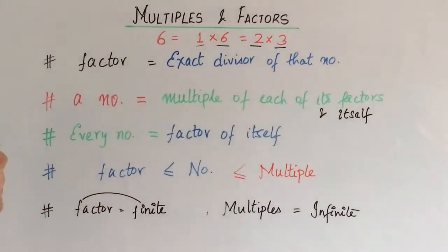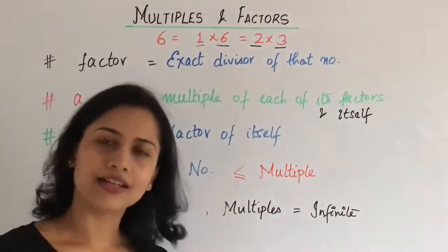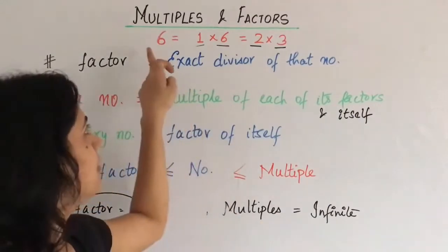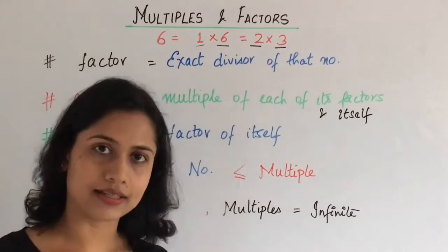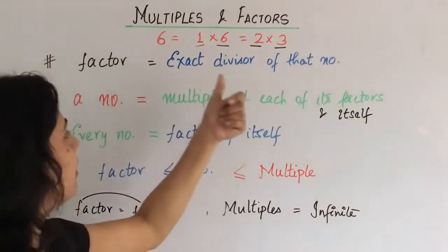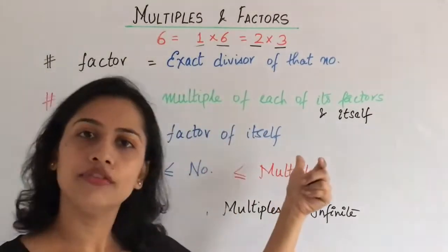Next property says that every number is a factor of itself. Same thing, 6 is a factor of 6. Now, we can say that every number is a factor of itself.